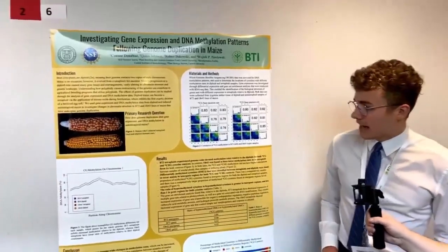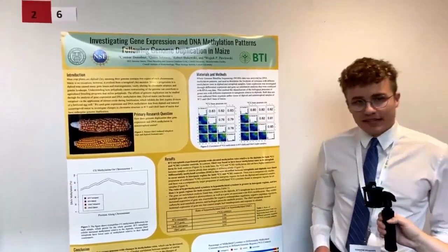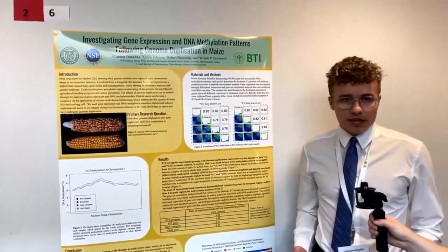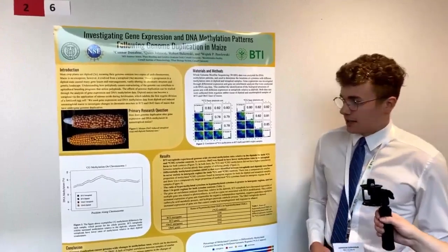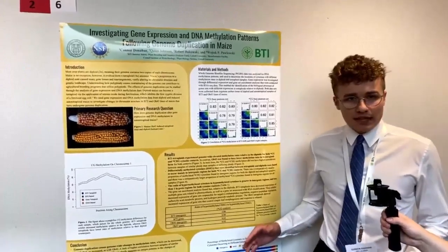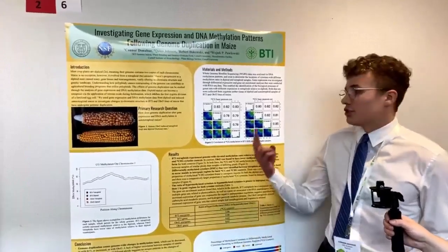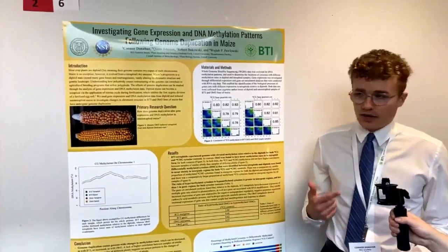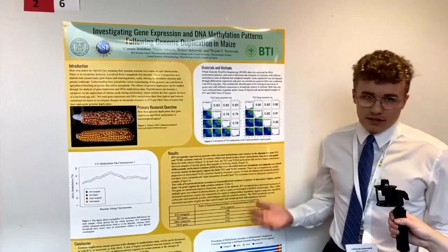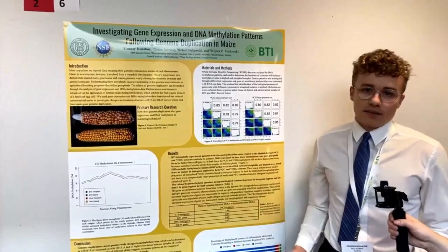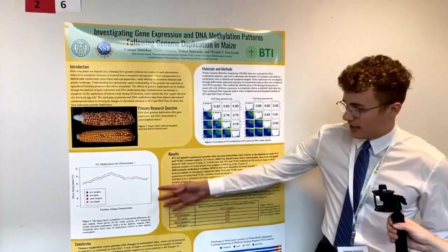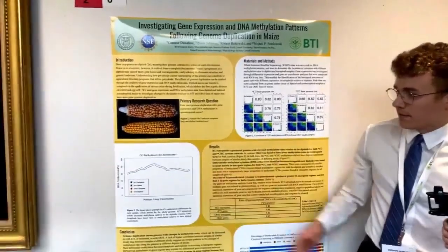Ultimately, I found that in B73, following genome duplication, there is an increase in methylation. I looked at two inbred lines of maize, B73 and OH43. In B73, the methylation increased overall, as you can see in this figure here.